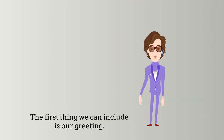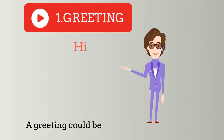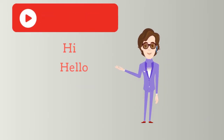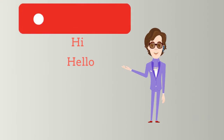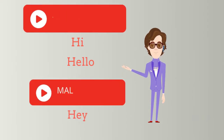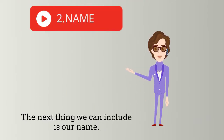The first thing we can include is our greeting. A greeting could be 'hi', 'hello', or 'hey'. Of these three, 'hi' and 'hello' could be used in both formal or informal situations, whereas 'hey' is usually used in more informal situations. The next thing we can include is our name.